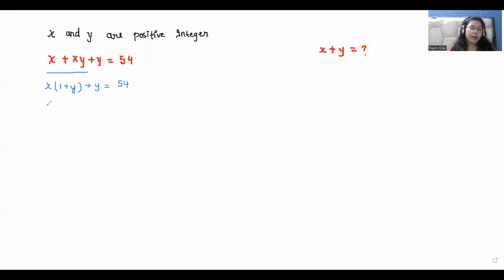Now if I'm adding 1 to both sides, what does it become? x(1 plus y) plus y plus 1 is equal to 54 plus 1, that is 55. If I take 1 common from here, it is x(1 plus y) plus (y plus 1) equals 55. Now both brackets are the same, so I can take out the common. So (1 plus y) times (x plus 1) is equal to 55.